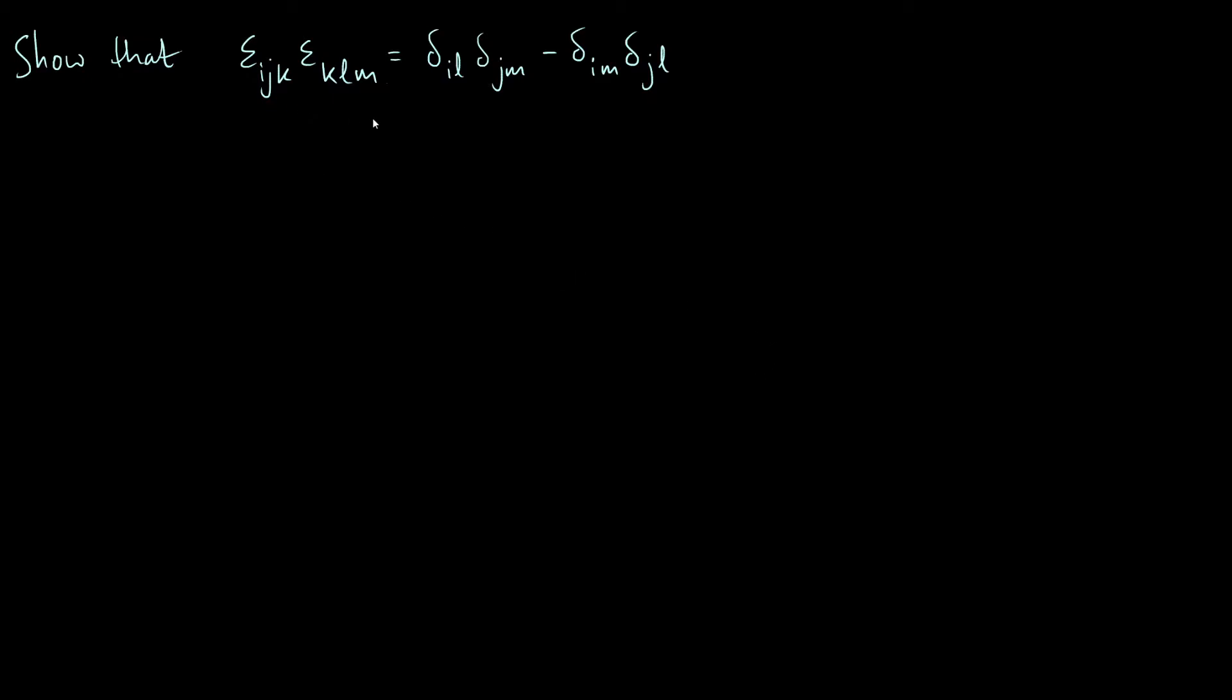And here's the identity we're trying to prove: epsilon_ijk epsilon_klm is delta_il delta_jm minus delta_im delta_jl. Now this is a very useful identity when we're proving relationships between vectors, especially when the cross product is involved, so that's kind of the motivation for doing this.